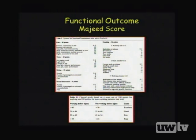The Majeed score was developed in the late 1980s by Majeed, who studied 60 patients prospectively. It assesses five areas: pain, work, sitting, sexual intercourse, and standing. Scores are divided based on whether the patient was working prior to injury — 0 to 100 if working before injury, and 0 to 80 if not working before injury.